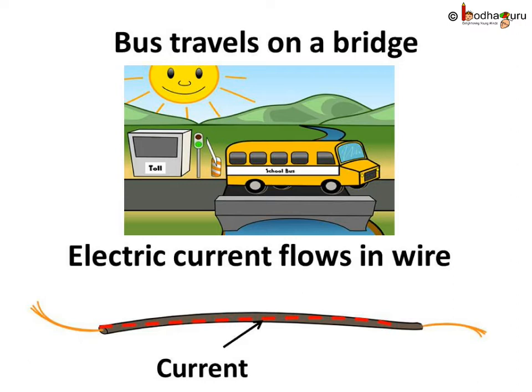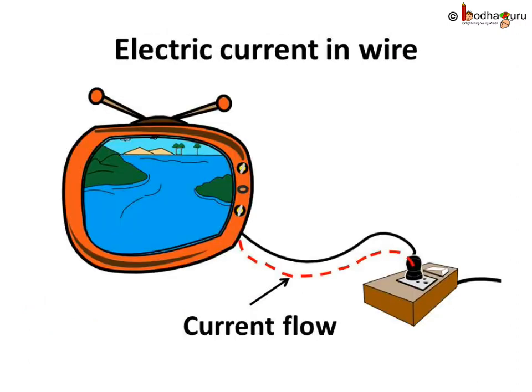This something must also have energy to move. This something is called the electric current, which gives appliances energy to run. Hence, we conclude, just like the flow of school bus through the bridge, there is a flow of electric current through the electric wires.